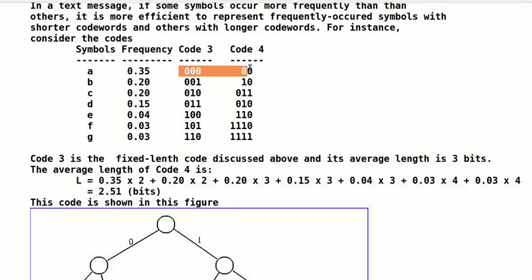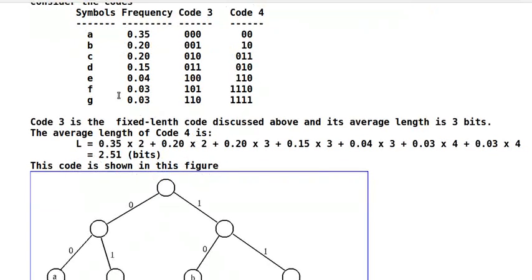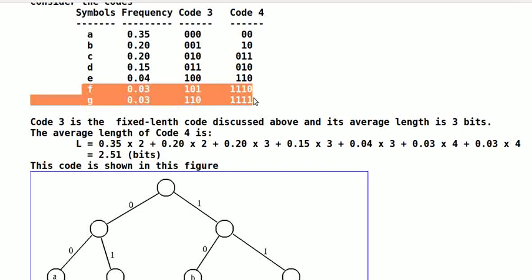Symbol A occurs more often than others, with a frequency of 0.35, and are represented by 000 and 00 in code 3 and code 4 respectively. Symbol B has frequency 0.20 in code 001 and 10, and so on. Symbols F and G have the least frequency of 0.03 and the longest codeword length of 4 bits in code 4.